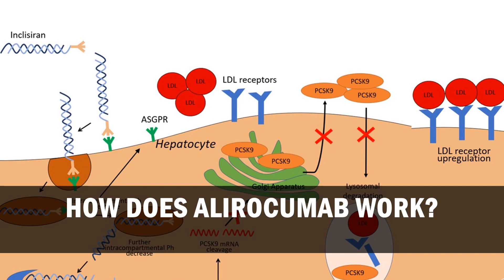As a result, the LDL receptors are not able to recycle to the plasma membrane, reducing their binding to LDL-C and therefore reducing the clearance of LDL-C from plasma. Therefore, by inhibiting PCSK9's actions, alirocumab allows for more LDL-C reuptake by the liver and facilitates a higher rate of clearance. Lower LDL cholesterol concentrations are associated with a reduced risk of coronary heart disease.